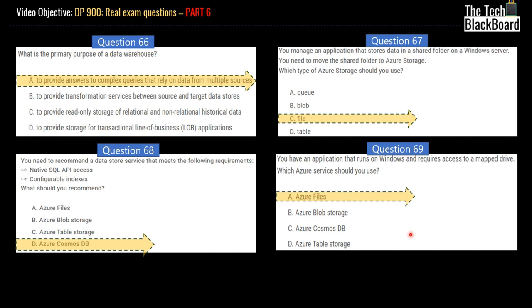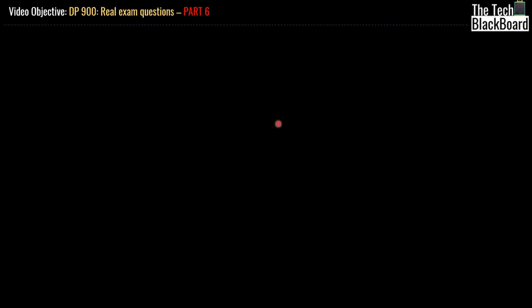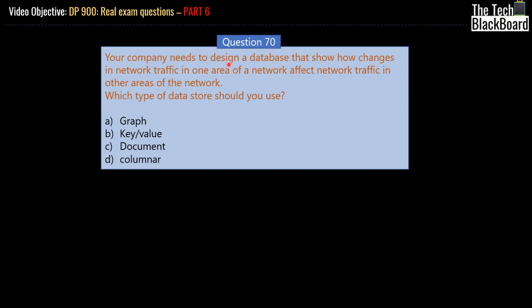Let's move on to our question number 70. Now let's look at the closing question for our Part 6, question number 70. This asks that your company needs to design a database that shows how changes in network traffic in one area of a network affect network traffic in other areas of the network. So which type of data store should you use? Should you use Graph, Key-Value, Document, or Columnar data? So looking at the question, the key points to note here are that you are on the same network. However, you want to know that changes in one area, how does it affect changes in another area?